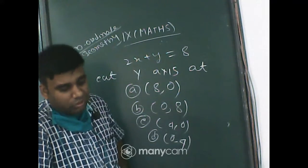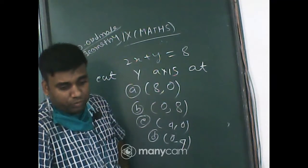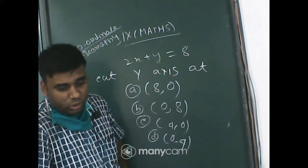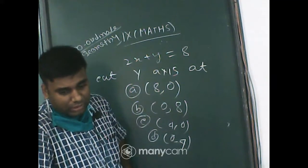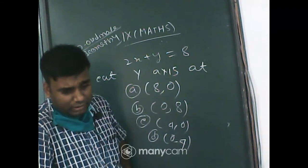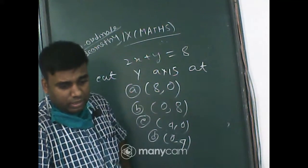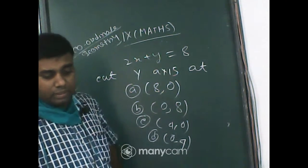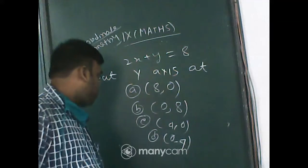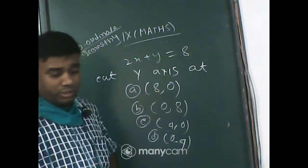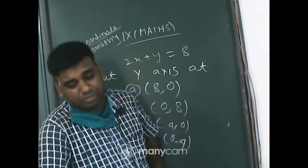Someone says (4, 0). Spriya Kanjilal, I am waiting for your answer quickly. Option C, (0, 4). Option C.